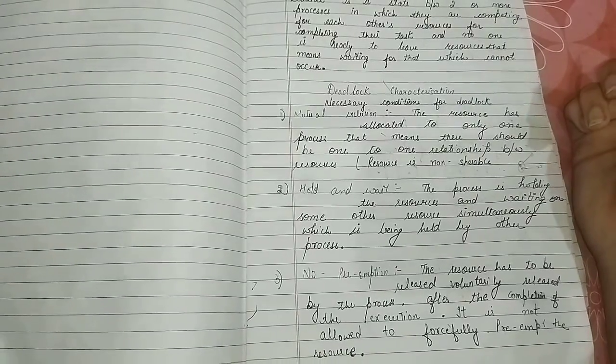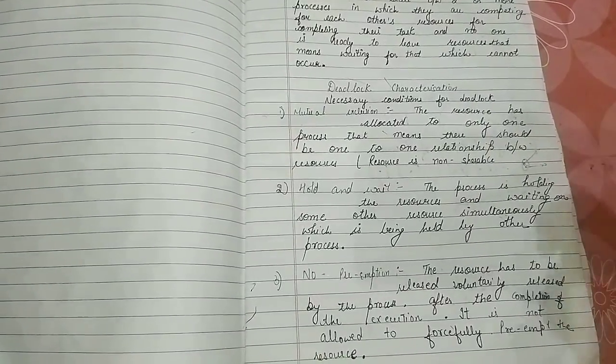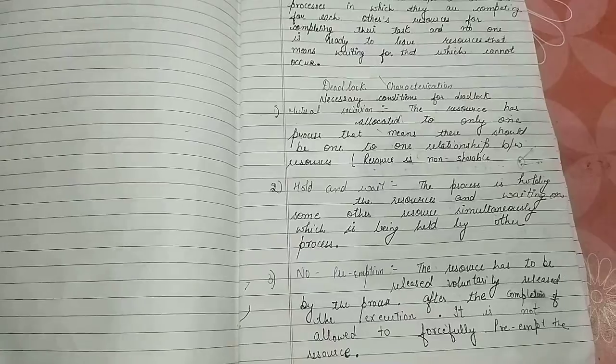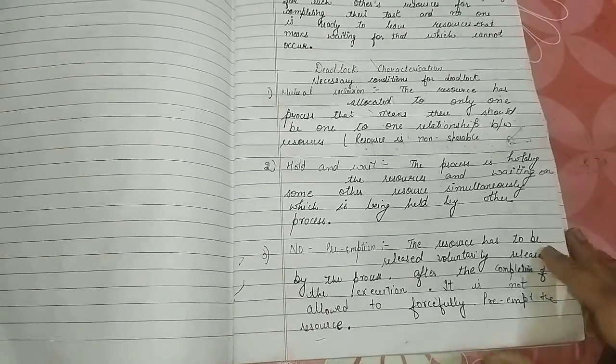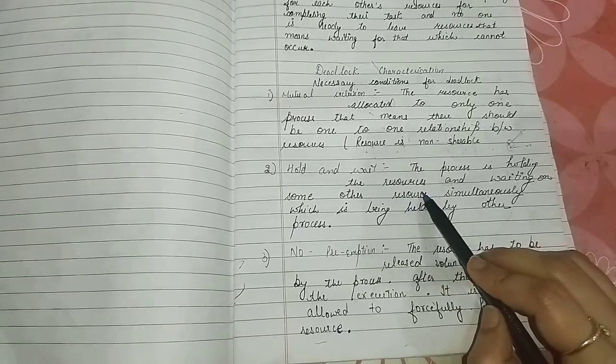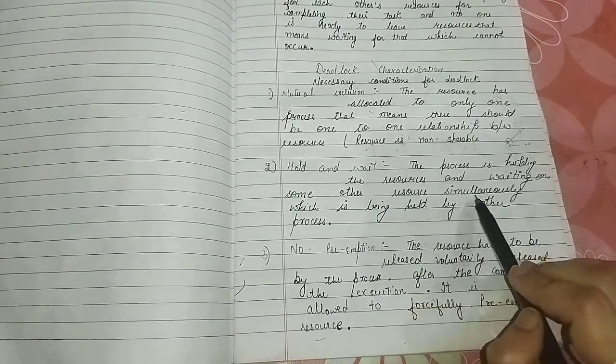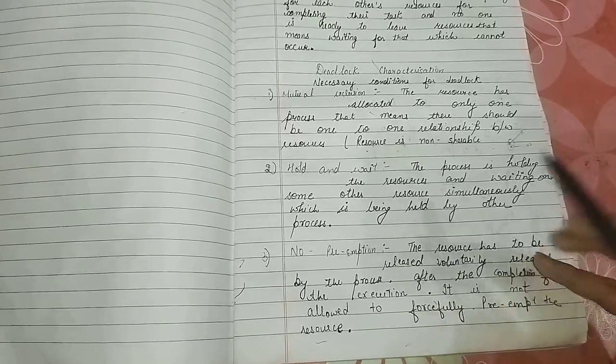Next is hold and wait. Now I have given the example of toffee. He will hold the toffee and wait. Now this is the deadlock. Hold and wait. The process is holding the resources and waiting on some other resources simultaneously.